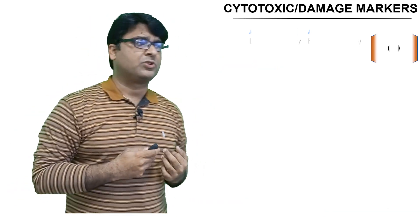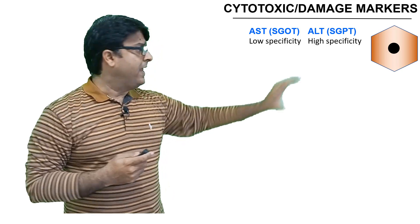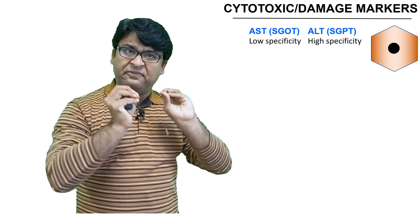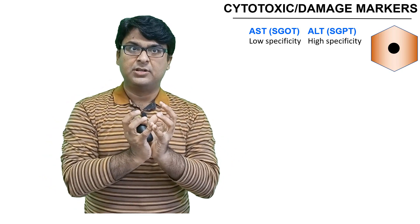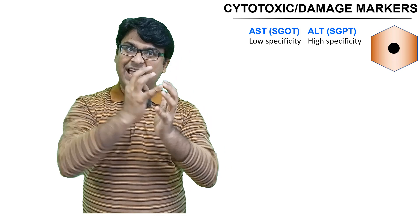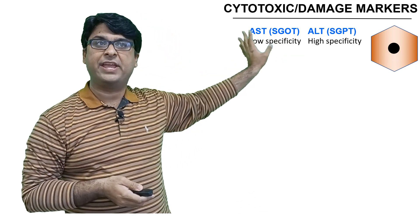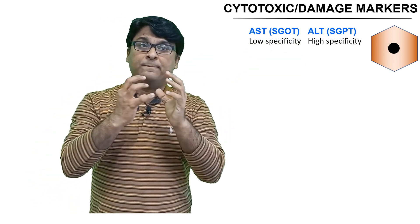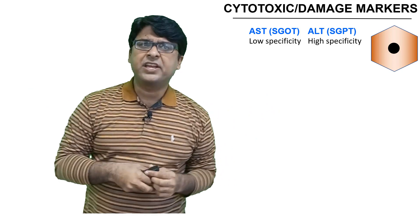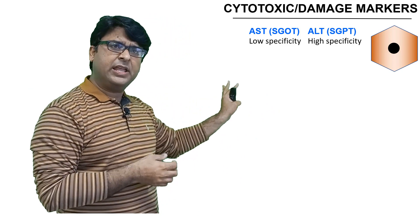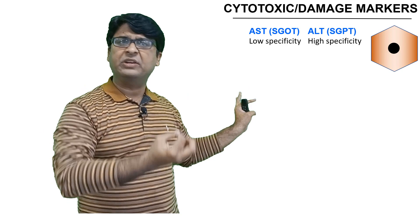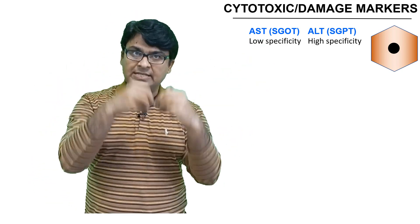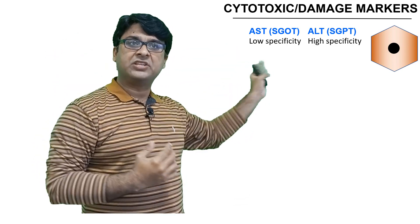Before discussing cytotoxic markers, note that inside the hepatocyte, there are two enzymes: AST (also known as SGOT) and ALT (SGPT). These are released when the hepatocyte is injured or inflamed — similar to cardiac markers in heart injury. If the hepatocyte is injured or inflamed, these levels in the blood go up. These markers are inside the hepatocyte and are released whenever there is hepatic injury.